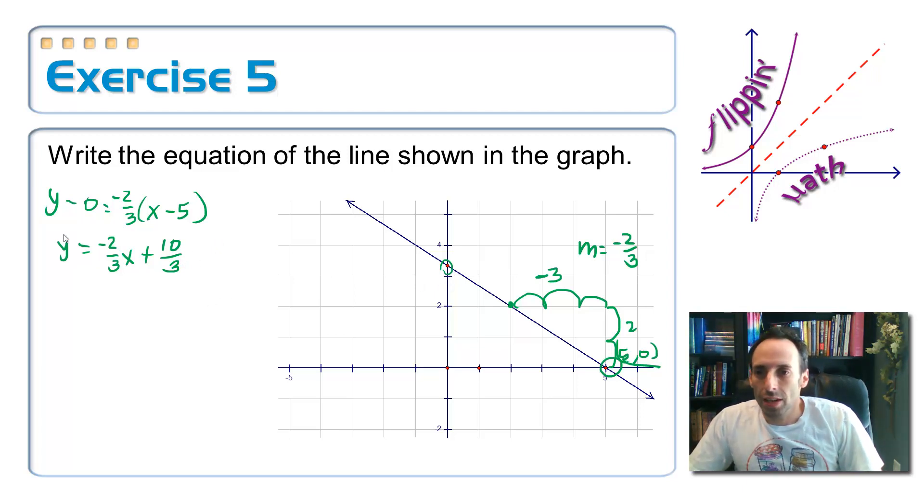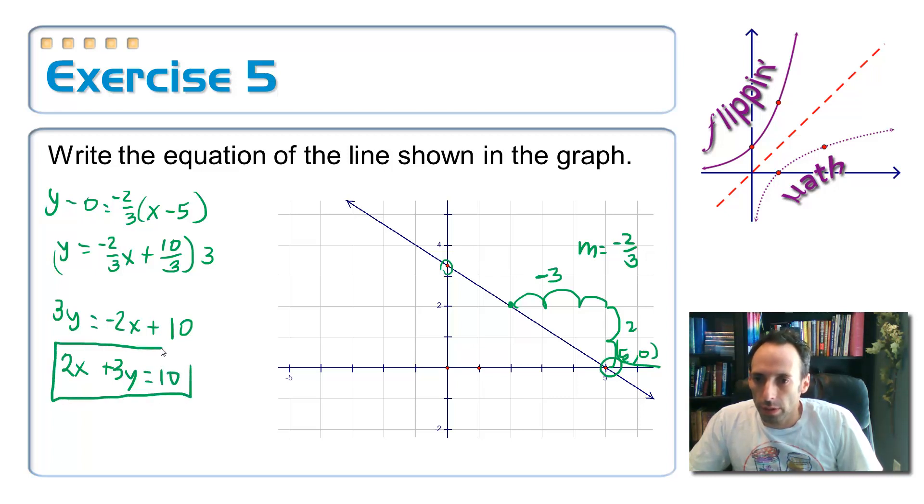And then if I'm going to put this thing in standard form, let's multiply everything by three to get rid of the fractions. Three y is equal to negative two x plus ten. And then just add the two x over. So two x plus three y is equal to ten. And there you go. There you have it.